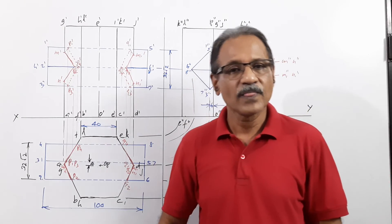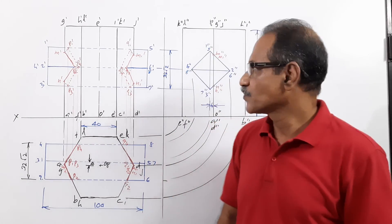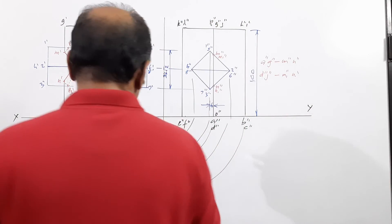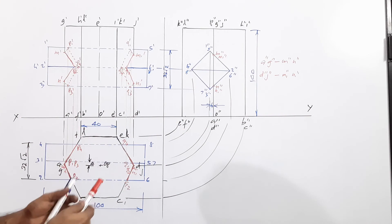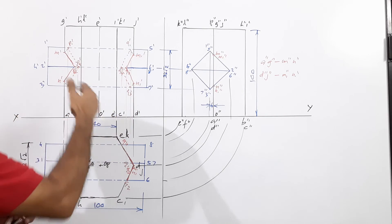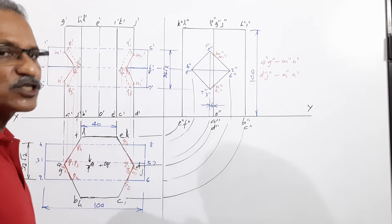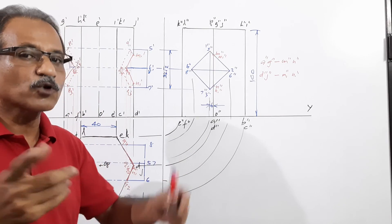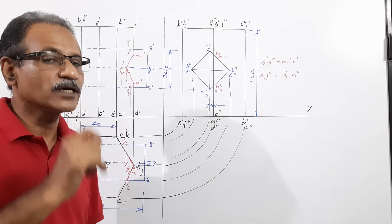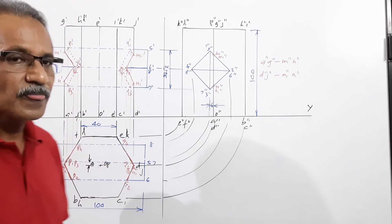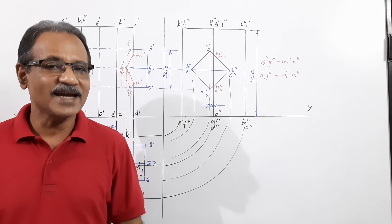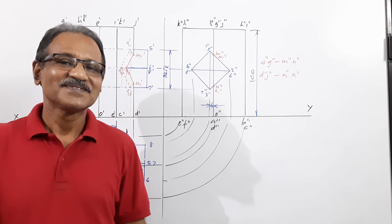Now suppose the two axes intersect — what happens? The intersection curve will simply be two curves. Behind the firm line there will be a dotted invisible line. That problem has already been drawn in one of the other videos. Please subscribe to the channel, share it with your friends, and like it. Thank you.